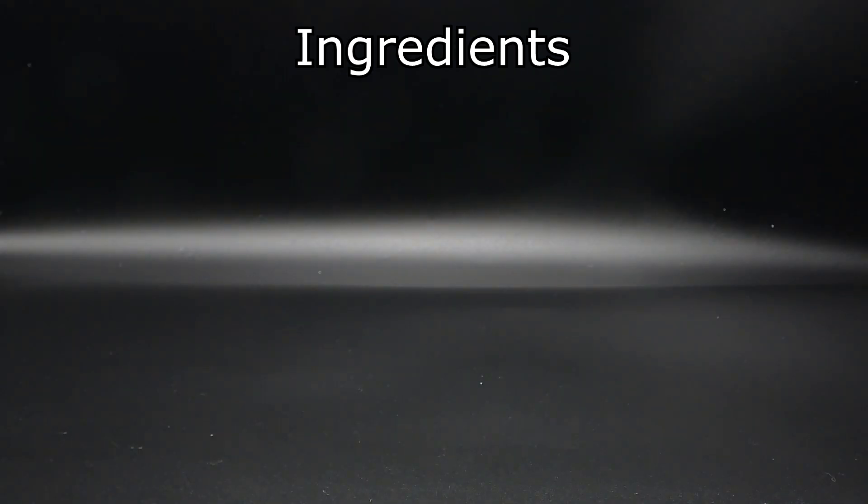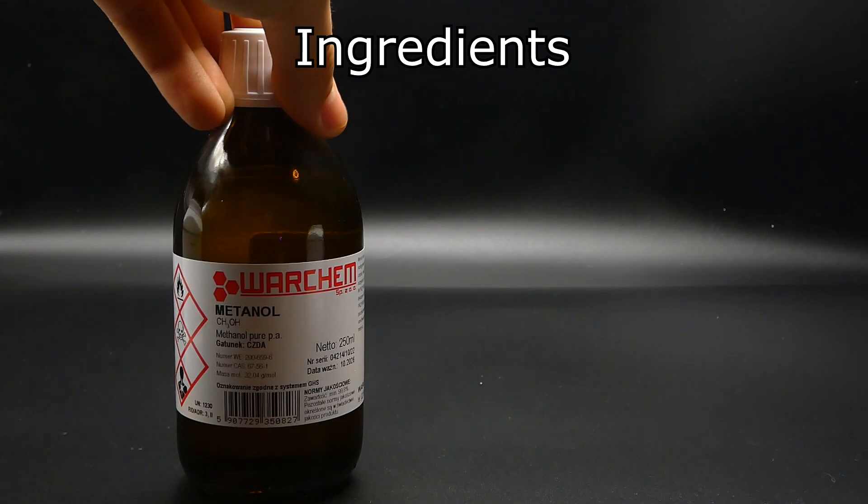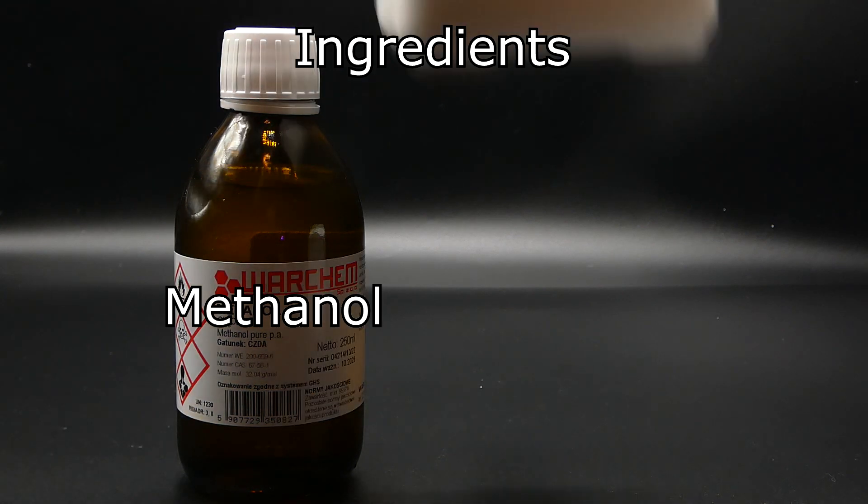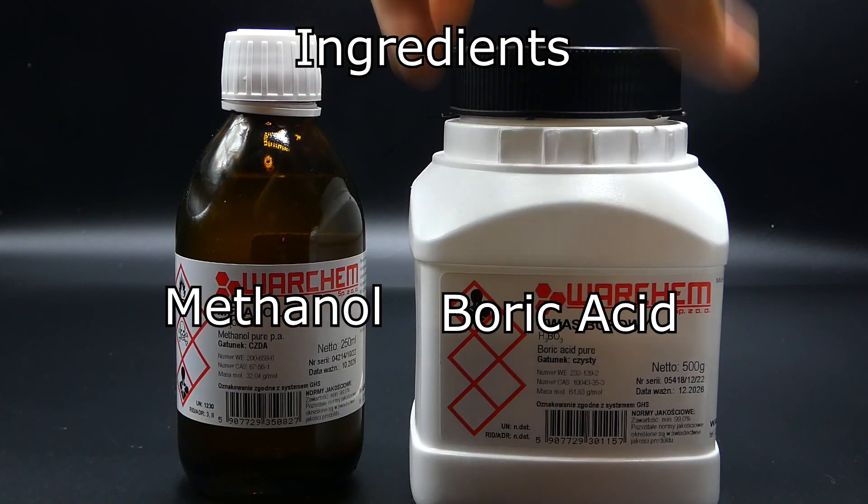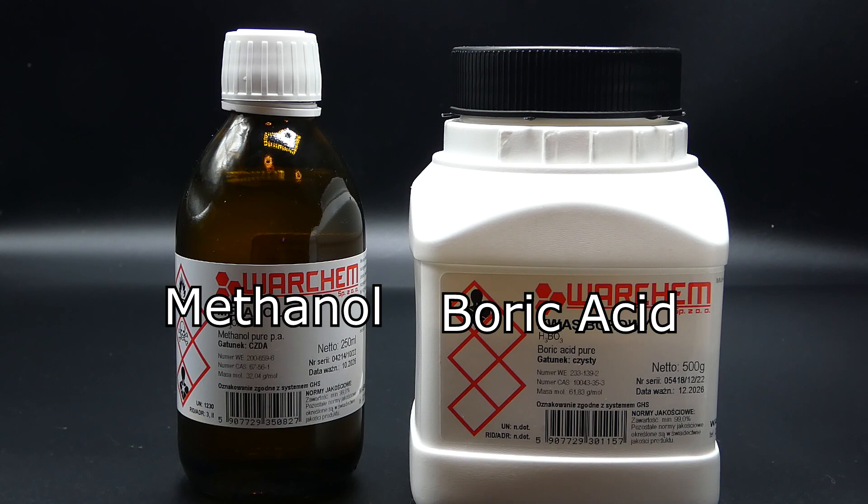So to make a green flame you need just two ingredients: methanol and boric acid. Both of these are cheap and easy to buy in most countries but be aware that they are quite toxic and should be handled with care.